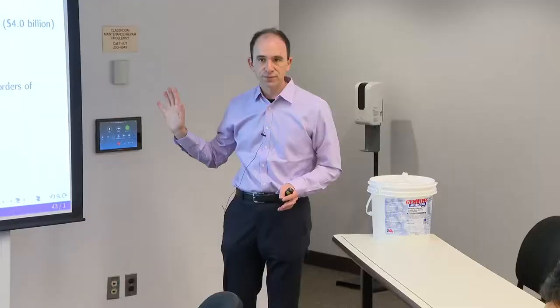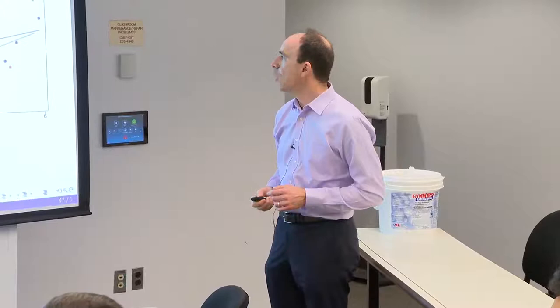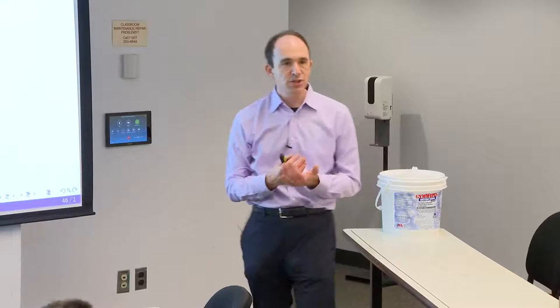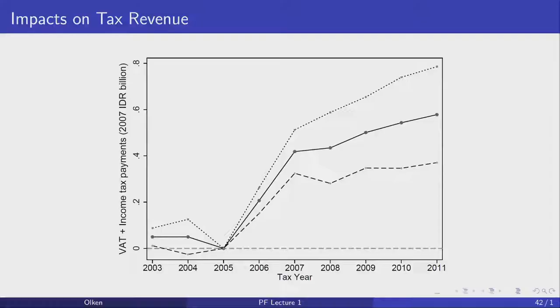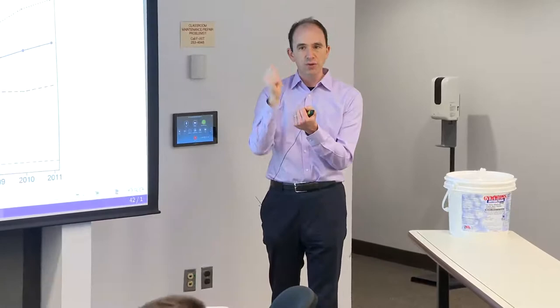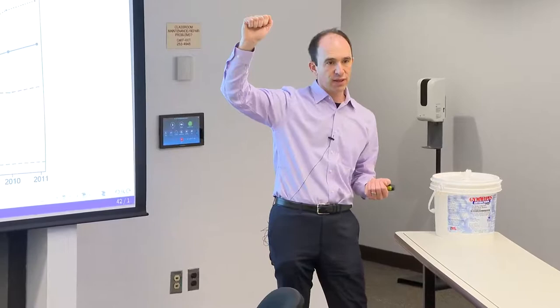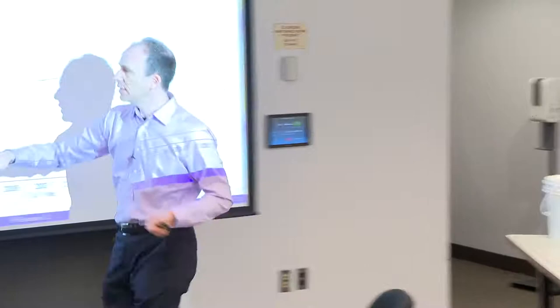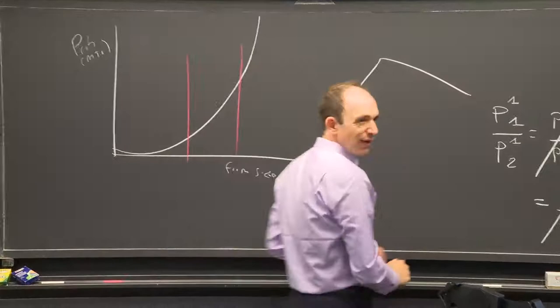The substantive point is that tax administration can make a really big difference. One striking finding is that the effect continues to go up over time rather than showing an initial jump followed by firms adapting. This might reflect that tax inspectors are learning, but we also think there may be a change in size-dependent taxation. If larger firms face higher enforcement probability, that creates an additional distortion from taxation as firms grow.